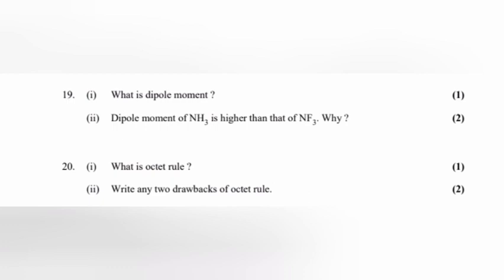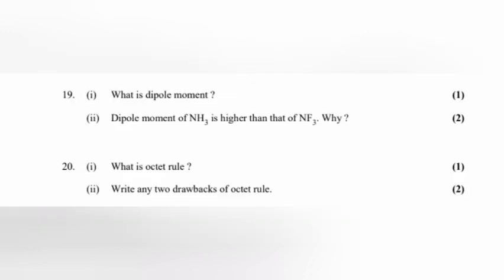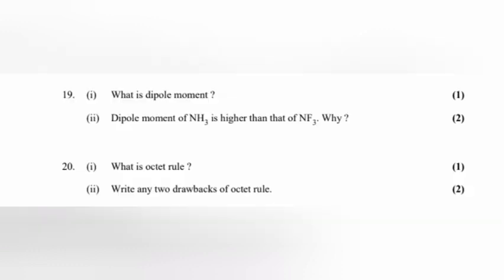Question 20, part 1: What is octet rule? Octet rule states that atoms containing 8 electrons in their valence shell are stable. Or, atoms undergo chemical reaction in order to attain 8 electrons in the valence shell.